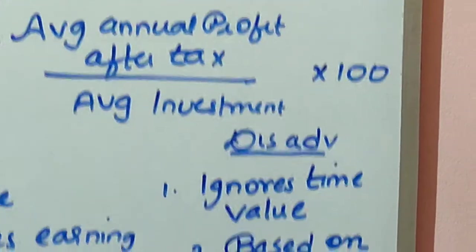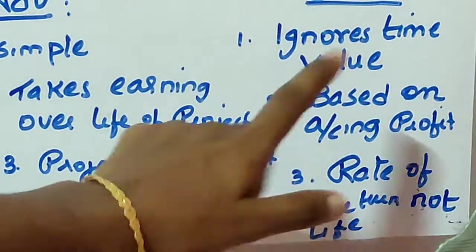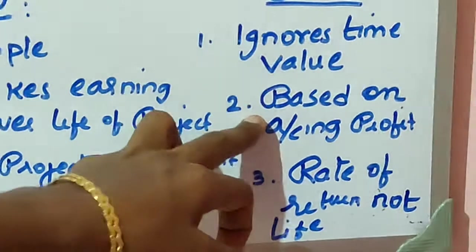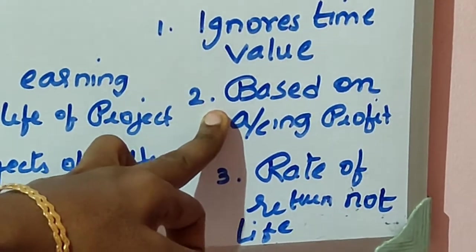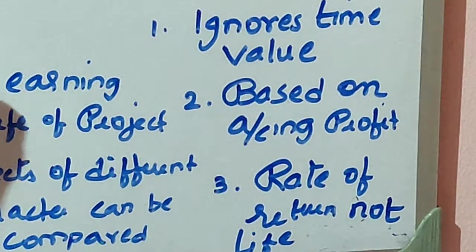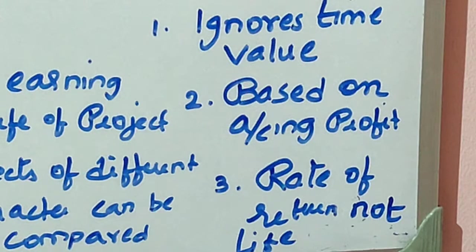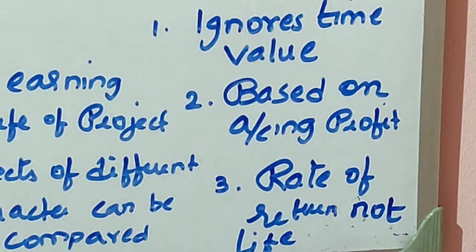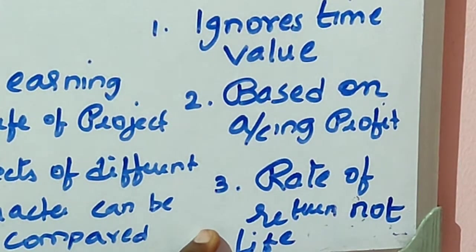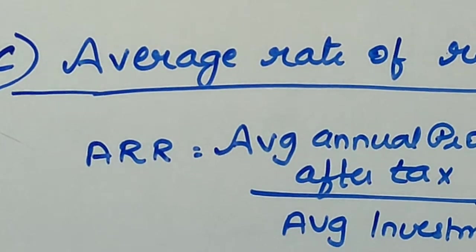The disadvantages of ARR: first, the average rate of return also ignores time value of money. Second, it is based on accounting profit — a project is selected on the basis of financial statements, not taking into consideration cash flows. Third, rate of return is taken into consideration but the life of the project is not — that is, what return a particular project generates throughout its entire life is not taken into consideration under the average rate of return method.